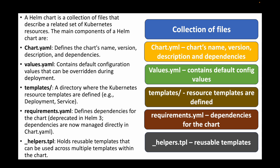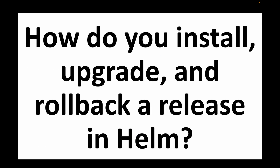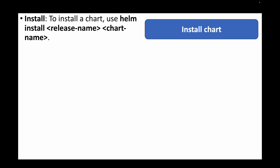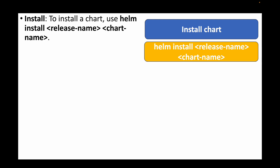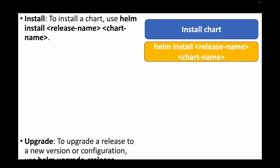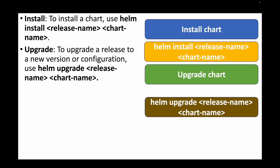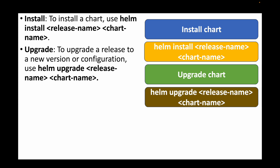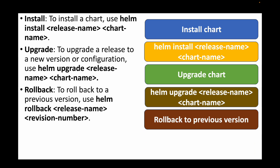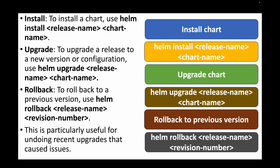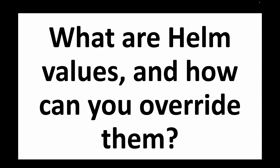The next question is: how do you install, upgrade, and roll back a release in Helm? To install a chart using Helm we use the command: helm install [release-name] [chart-name]. To upgrade a release to a newer version or configuration we use: helm upgrade [release-name] [chart-name]. At any point if you want to roll back to a previous version, we use: helm rollback [release-name] [revision]. This is particularly useful when you want to undo recent upgrades that might be causing an issue.